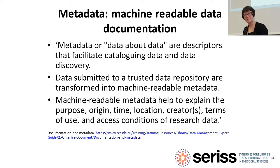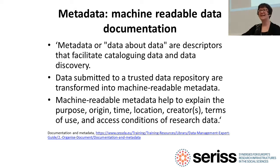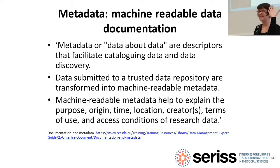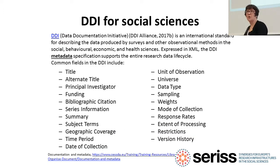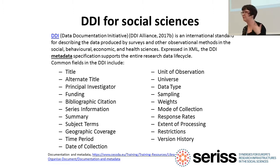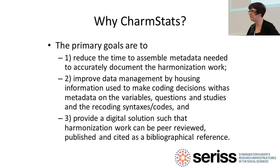We talked in the last lecture about metadata and what it does. Metadata in an archive is turned into machine-readable format so it can be findable, and it contains all the information people need to know about the study in order to evaluate: was it done properly, when was it done, who was asked, and who can this data be applied to?